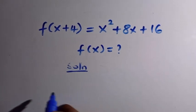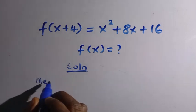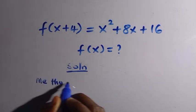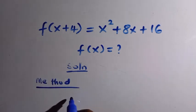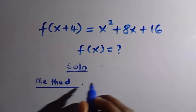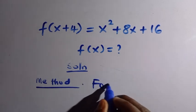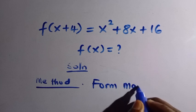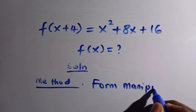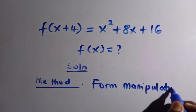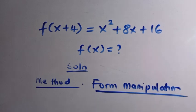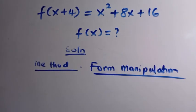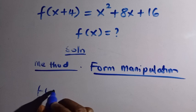Let's see Method One. For the first method we are going to apply form manipulation. We call this one the form manipulation method. In this form manipulation we are going to consider the left hand side while the right hand side still remains.